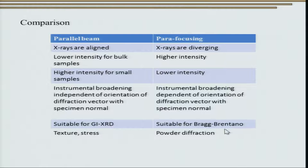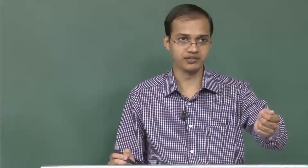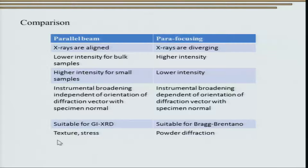Para-focusing geometry is very suitable for normal Bragg-Brentano geometry — what we use when we bring a normal sample to the diffractometer. Parallel beam geometry is useful for stress, texture, and grazing incidence X-ray diffraction. The entire spectrum of diffraction techniques can be covered just by adjusting the optics and source used in a normal diffractometer.